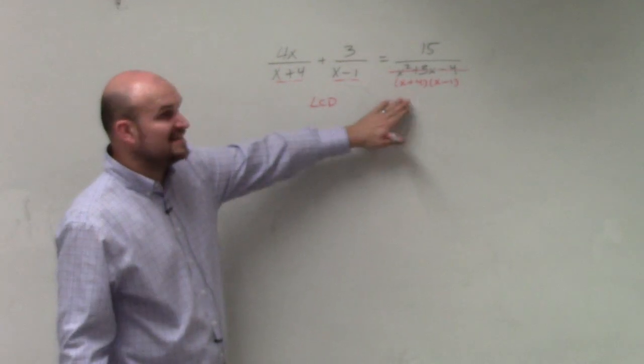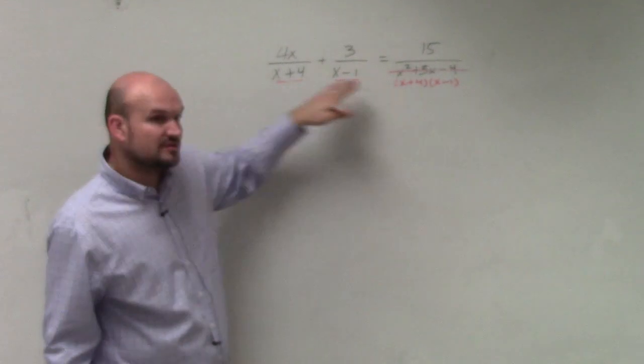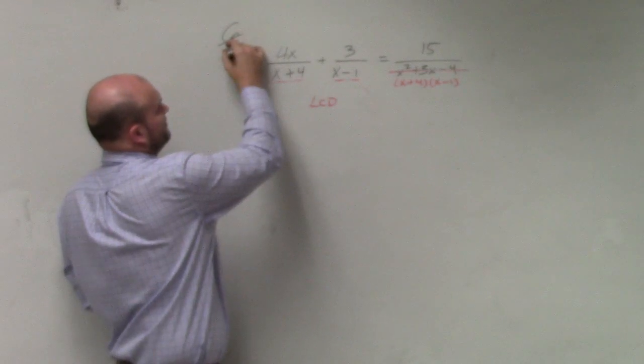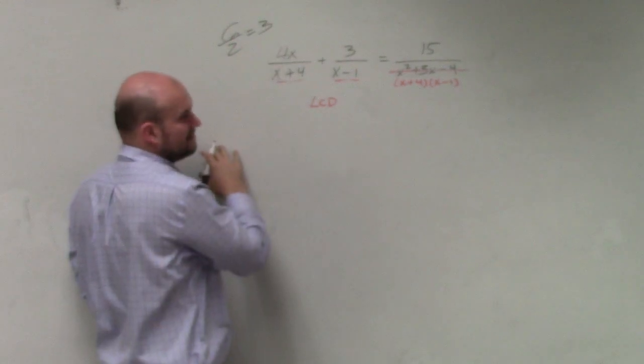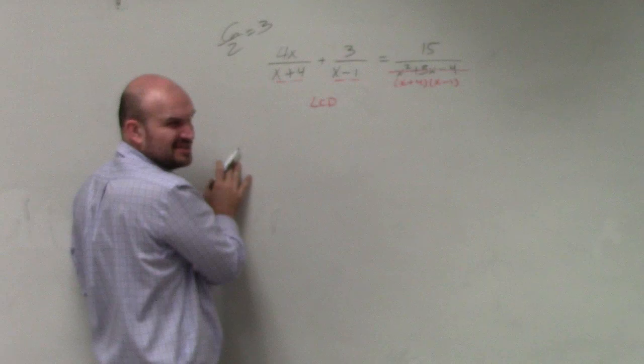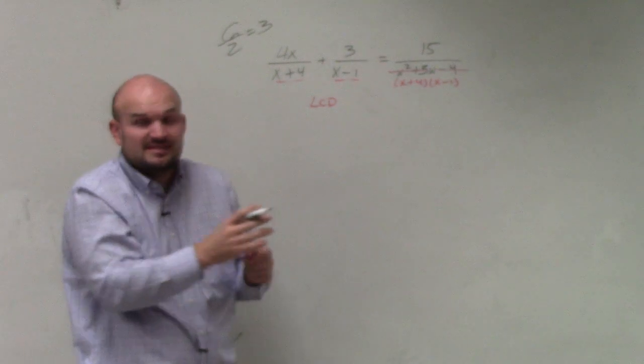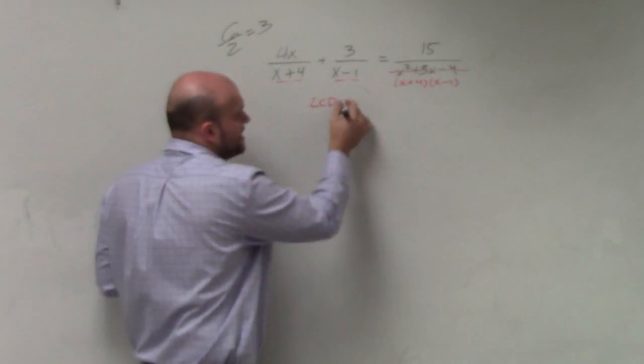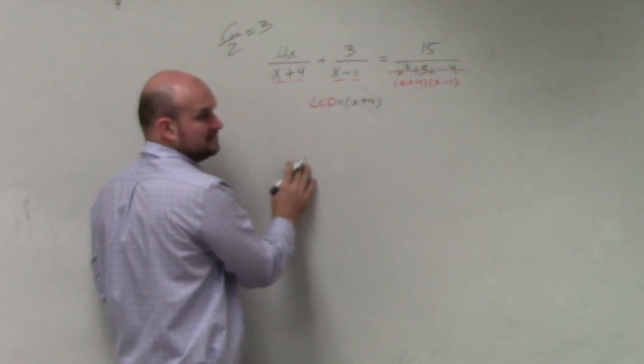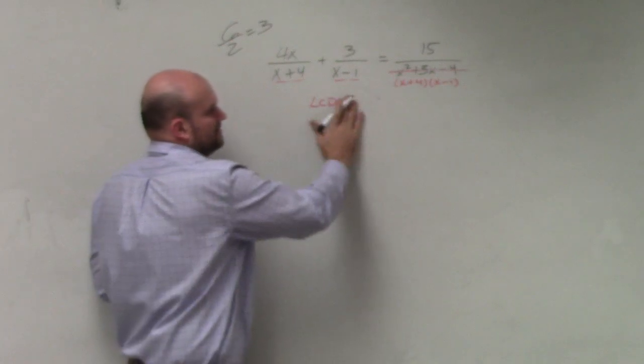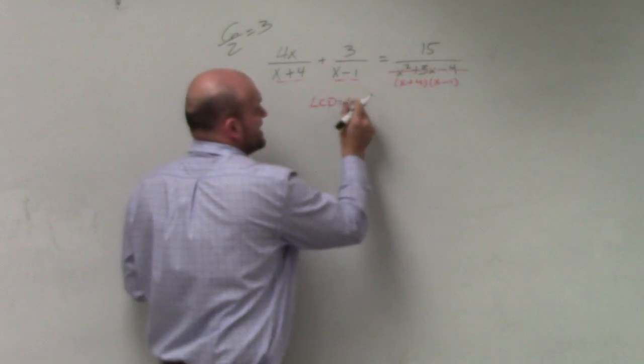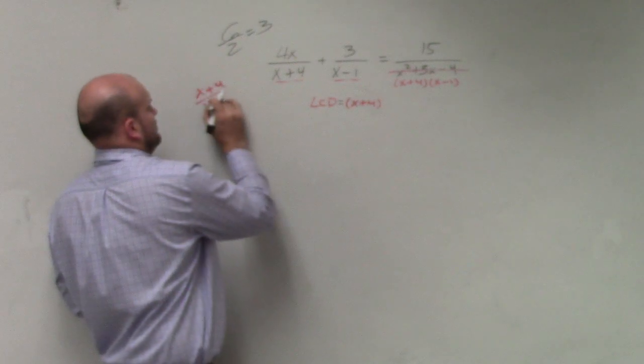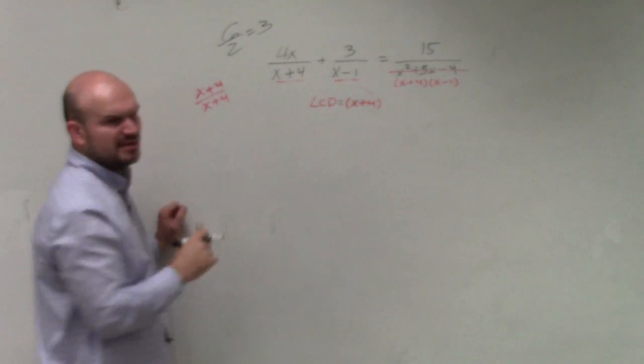So all right. Now, I need to find something that all three of these divide into. So let's think about this. Numbers is easy. That's easy. What does x plus 4 divide into? Does anything ring into your head? The easiest thing for me is, does everything divide into itself? Yes. So why don't we just say x plus 4? Does x plus 4 divide into x plus 4? Of course it does. That's the division property, right? That goes to 1.